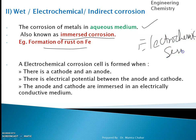The metal with a highly negative electrode potential acts as the anode and easily ionizes. The other electrode acts as the cathode.